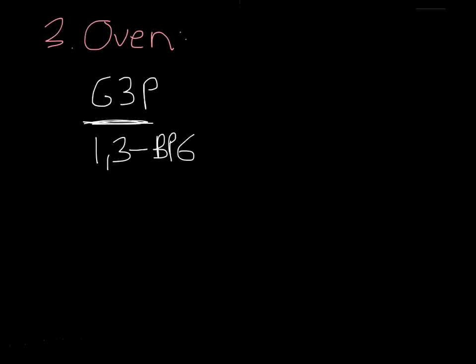So continuing on, our next locus is going to be the oven. So maybe the oven in your kitchen. And our molecules there are going to be glyceraldehyde 3-phosphate. And so I wrote G6P as glucose 6-phosphate before, but just keep those distinguished because of the abbreviation here. So G3P for glyceraldehyde 3-phosphate, and then the next molecule is 1,3-bisphosphoglycerate. So I'll call that BPG.